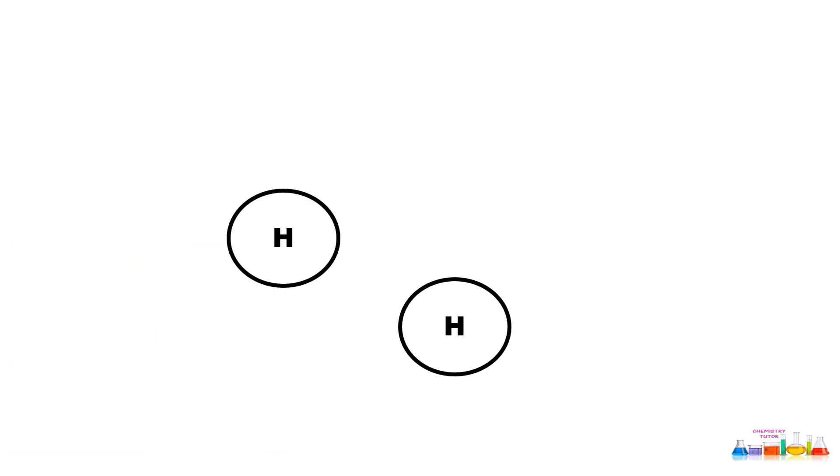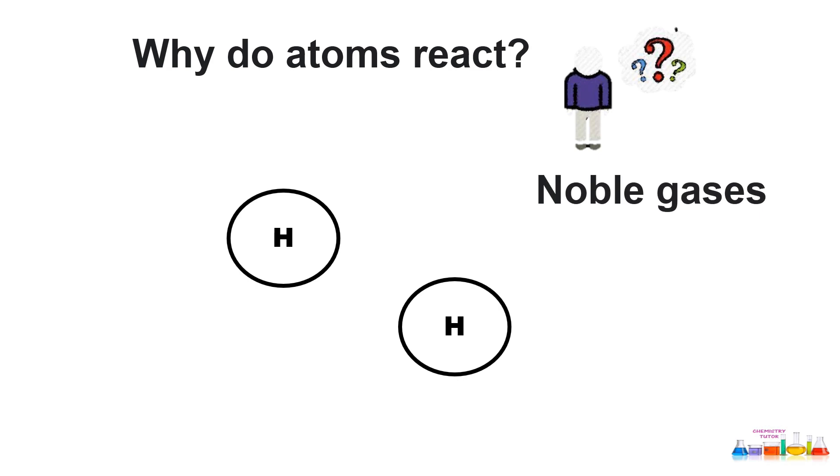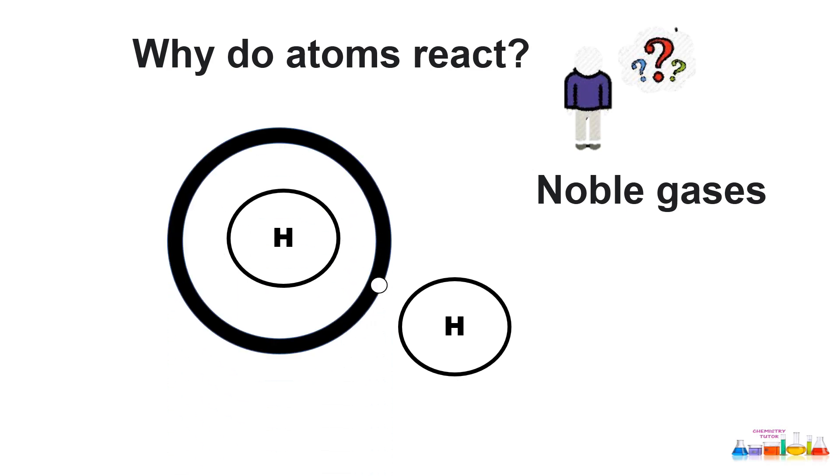Now the question is, why do atoms react? The answer is noble gases. Because we know that they have complete duplet and octet, every other element in the periodic table wants to attain stability like noble gases. How will they attain this stability? Sometimes by sharing electrons.